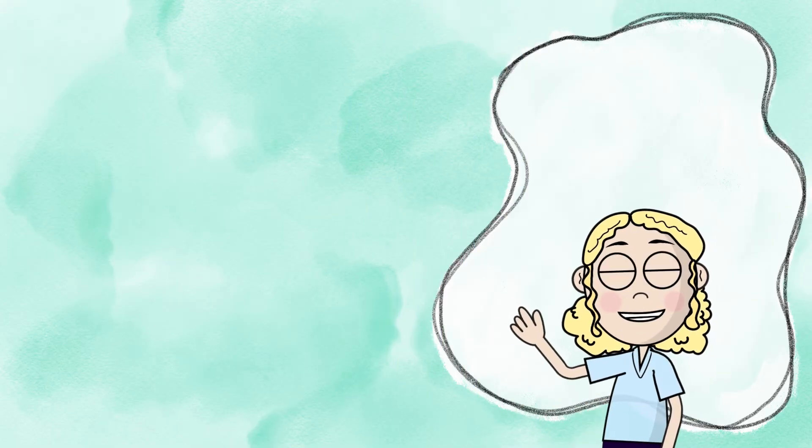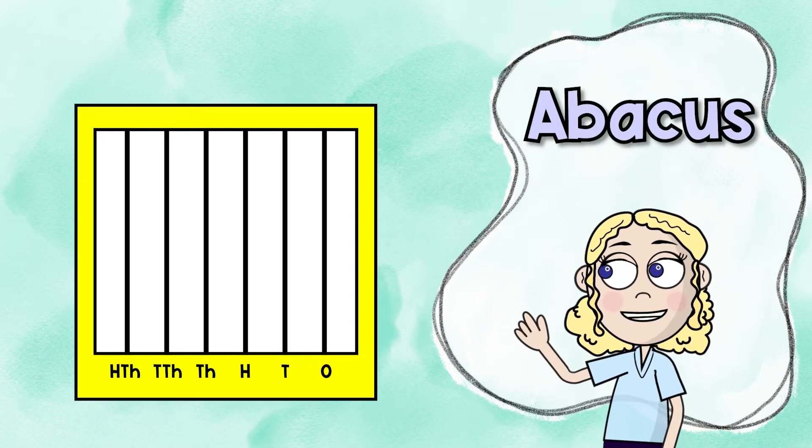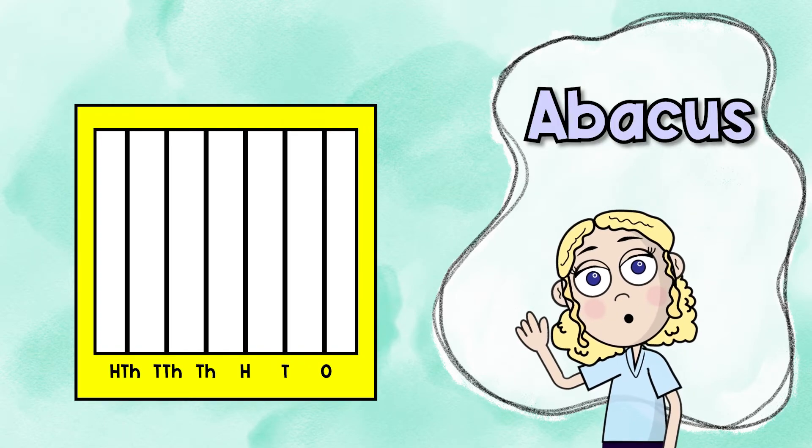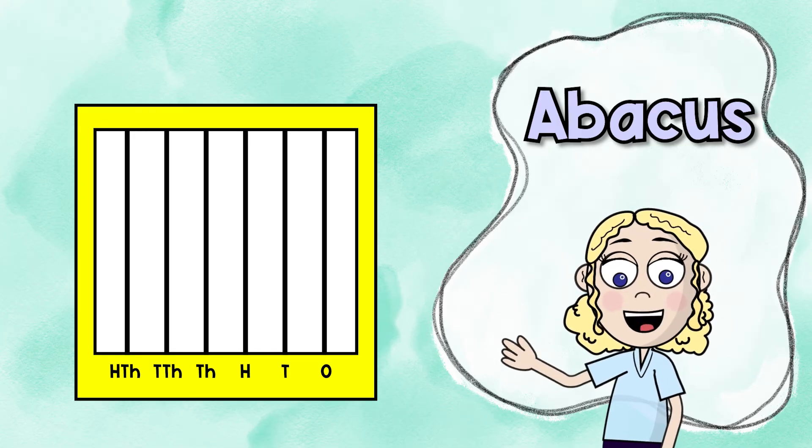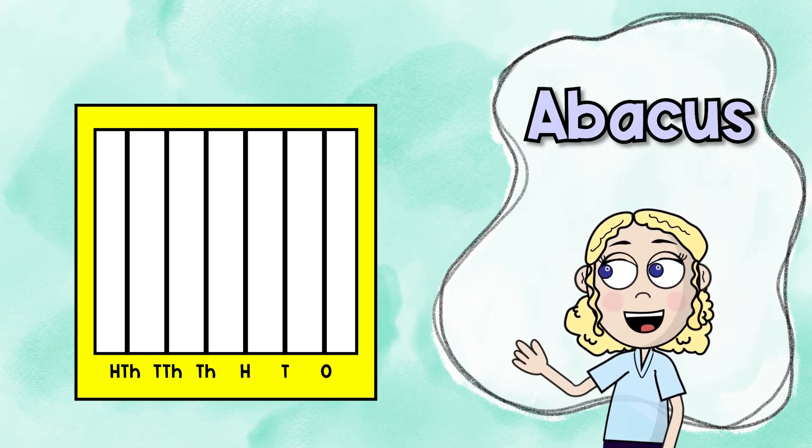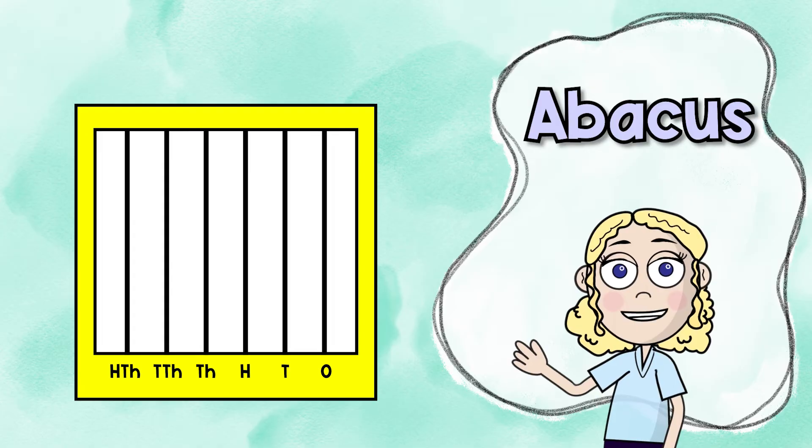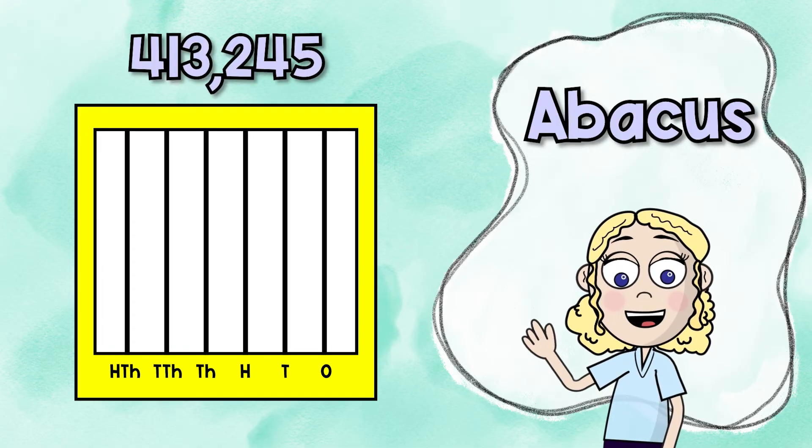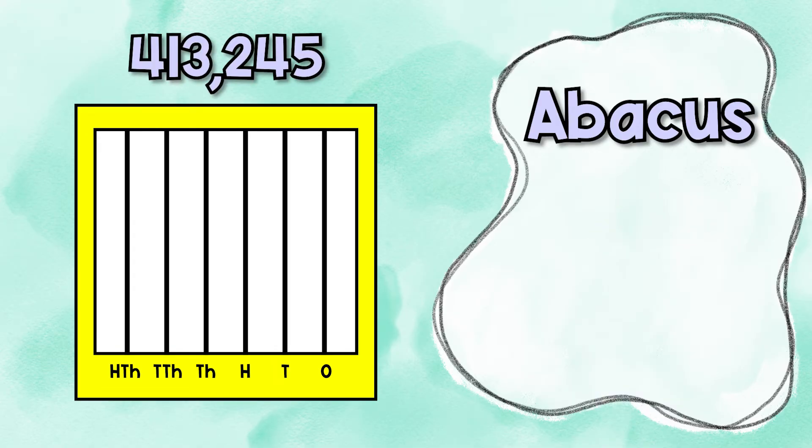All right, check this out. This is an abacus and this is actually an ancient way they used to not only show numbers but compute numbers. You can actually put place value on an abacus like this. So let's look at this number right here. How can we show this on the abacus? We're going to put the number of beads in each place value on each line.